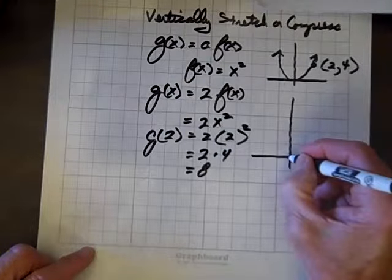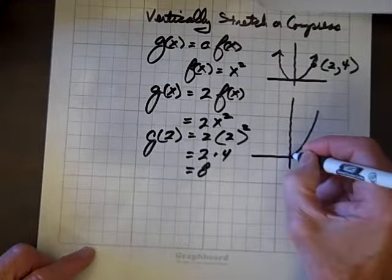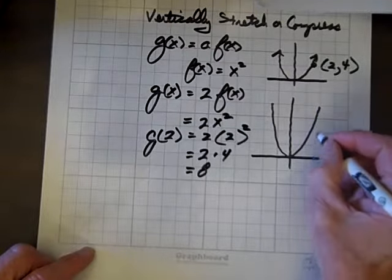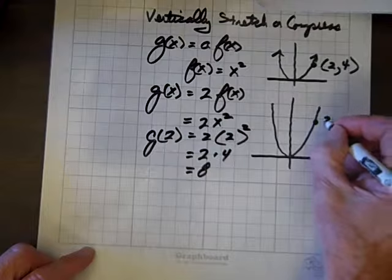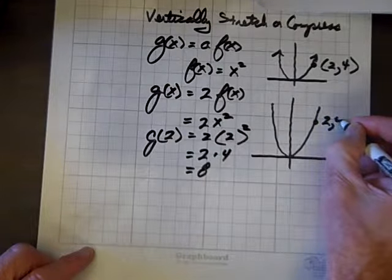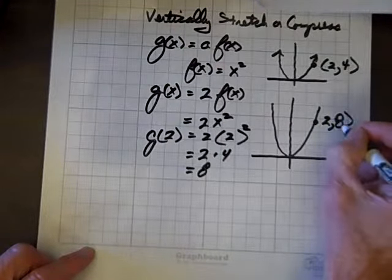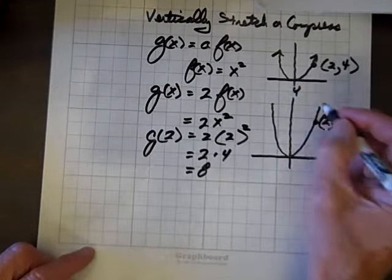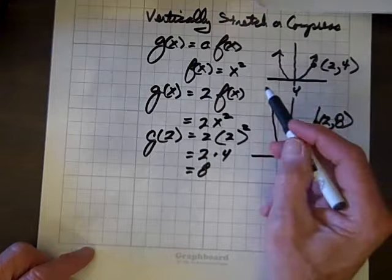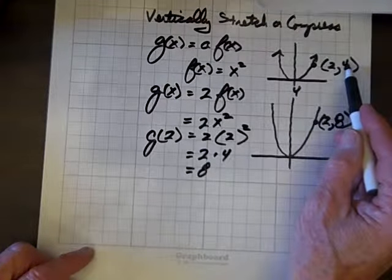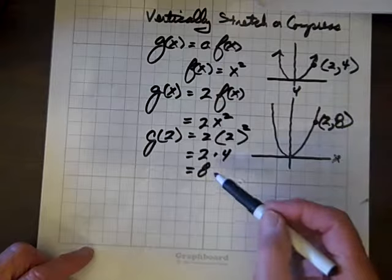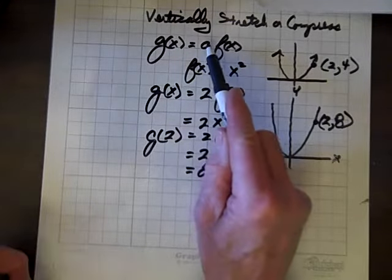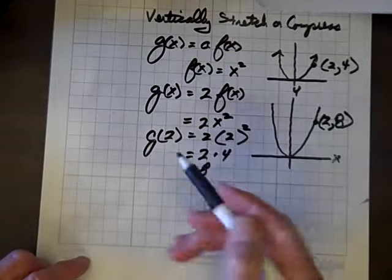So what we've done, if we go over 2, we'll go up, we now have a y value of 8. So the y value has been adjusted by a factor of 2, or in general, by a factor of a.